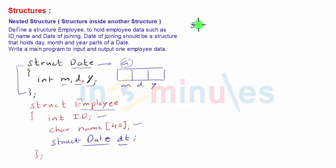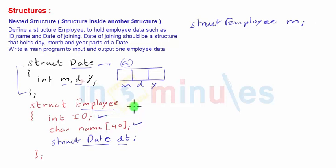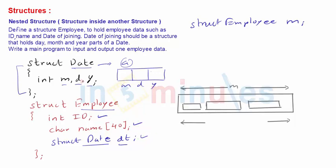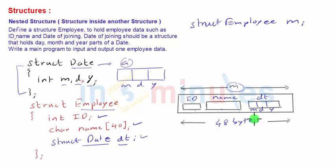To define a structure variable of type employee, we write 'struct employee m'. So m will have three parts: ID (a 2-byte integer), name (a 40-byte character array, i.e., a string), and dt (a structure holding three variables). In all, m will be a structure holding ID (integer), name (40-byte string), and dt (a 6-byte structure itself having three parts: d, m, and y) — totaling 2 + 40 + 6 = 48 bytes of data.